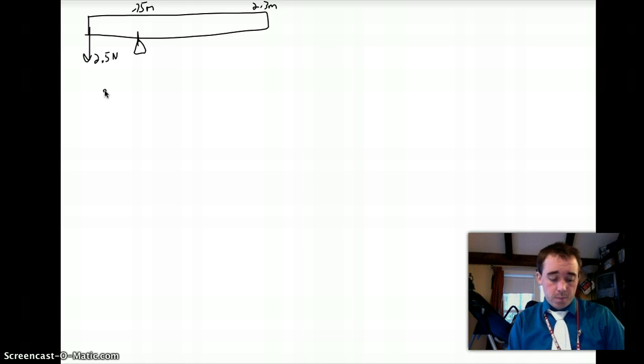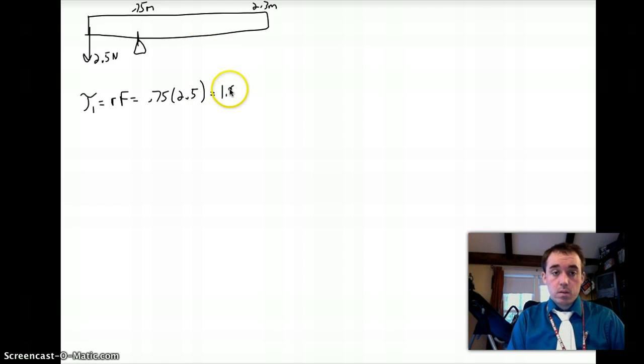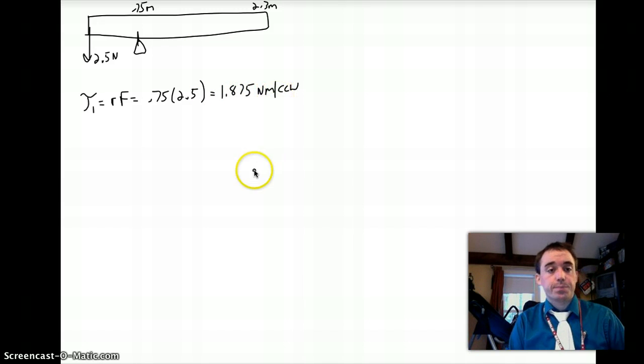But I kind of just want to give you the setup. Torque 1, which is the torque due to the force, is going to simply be R times F, and R is 0.75 because that's the distance from the pivot point to the 2.5 newtons, which is my force. So, 0.75 times 2.5 is 1.875. And I can do that as newton meters, and already I can just say counterclockwise.